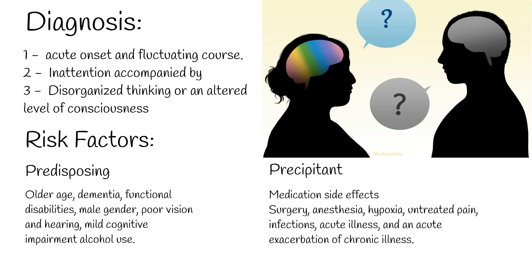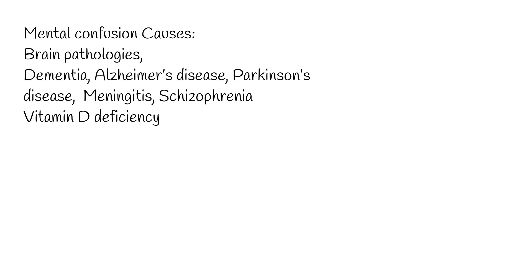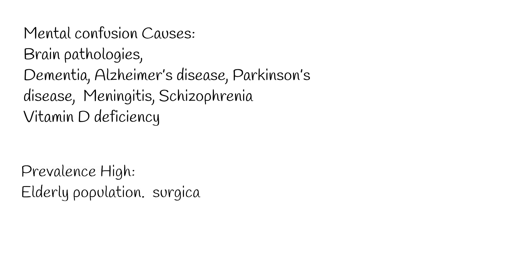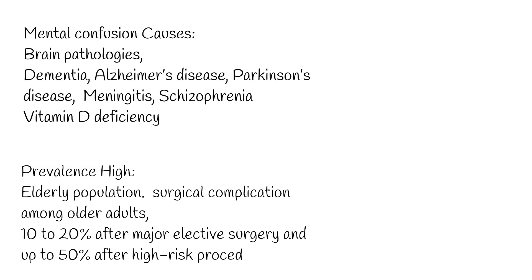Confusion is a much wider term than delirium. Mental confusion can result from chronic organic brain pathologies such as dementia, Alzheimer's disease, Parkinson's disease, meningitis, schizophrenia, and other mental disorders. According to new research, vitamin D deficiency can cause cognitive impairment including foggy brain. The prevalence of delirium is higher in the elderly population, and it is a common surgical complication among older adults, with an incidence reported up to 10–20% after major elective surgery and up to 50% after high-risk procedures.